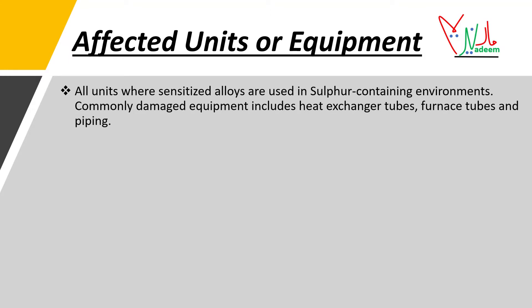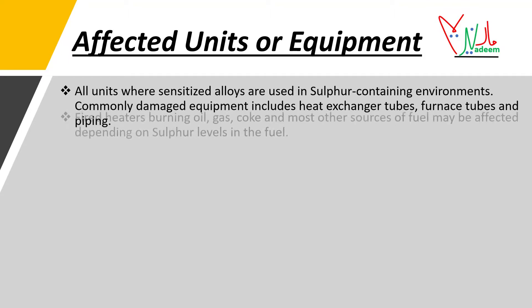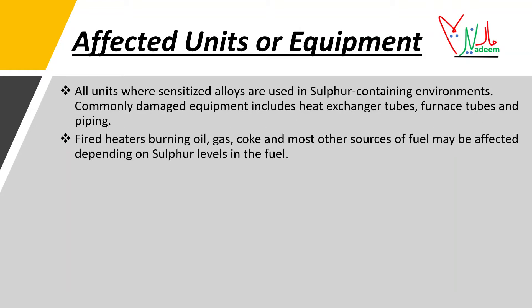Affected units and equipment include all units where sensitized alloys are used in sulfur-containing environments. Commonly damaged equipment includes heat exchanger tubes, furnace tubes, and piping. Fired heaters burning oil, gas, coke, and most other fuel sources may also be affected, depending on sulfur levels in the fuel.